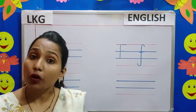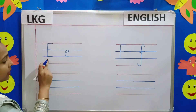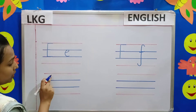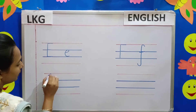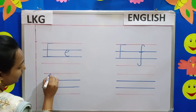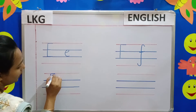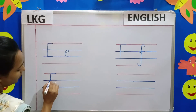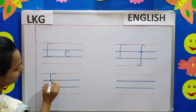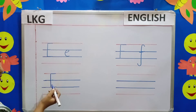Now I will teach you the formation of this letter. Follow me on the board. When you write capital letter E in your workbook, place your pencil here on this red line. Draw a straight line down and touch this blue line. Then again place your pencil here on the red line and draw a straight line towards the side. Draw another line towards the side here on this blue line, but it should be a bit smaller than the first line. Again place your pencil here on this blue line and draw another line towards the side. So you have written capital letter E.